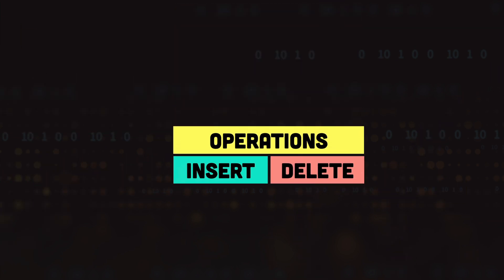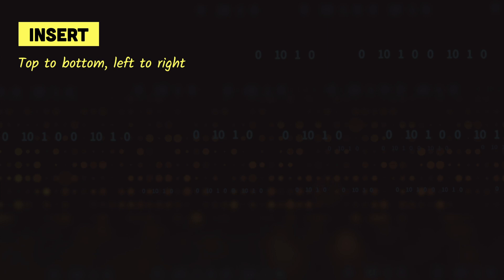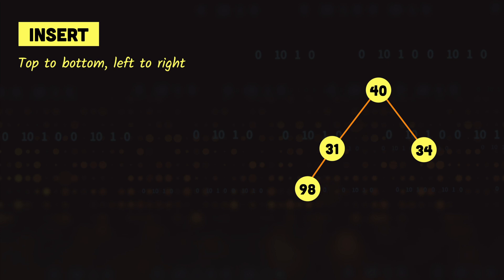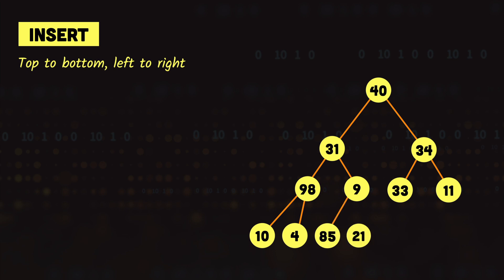Let's look at the heap operations. First we have the insert operation. Insertions in a heap are done from top to bottom and left to right. Starting with node 40 as the root, the next item 31 is inserted to the left, 34 to the right, 98 to the left of 31, 9 to the right, 33 to the left of 34, and 11 to the right of 34. We keep inserting new nodes from left to right.